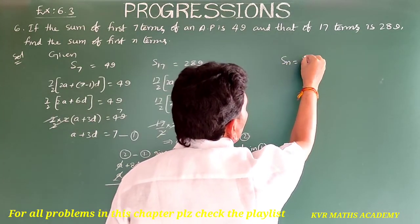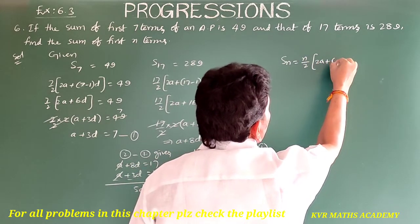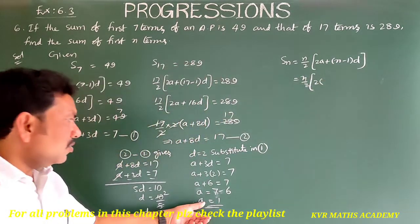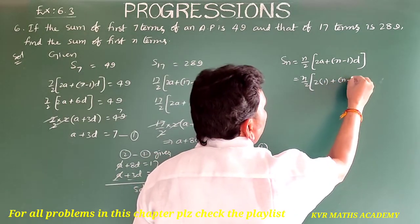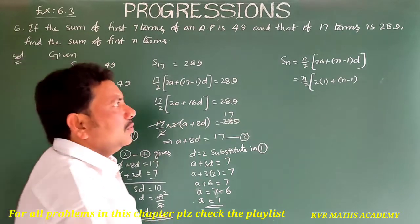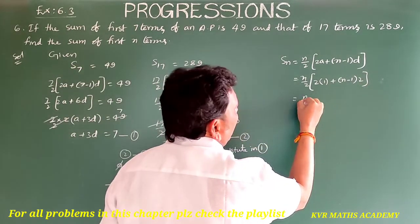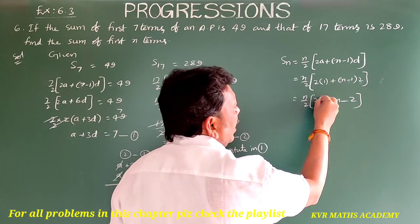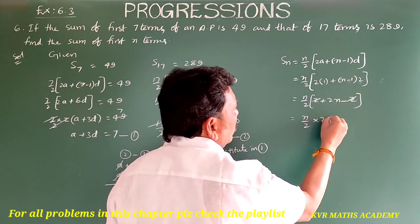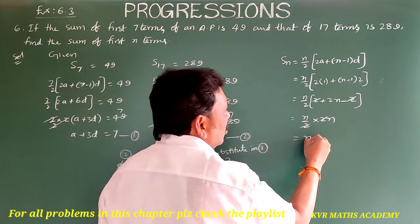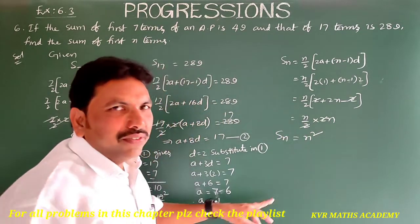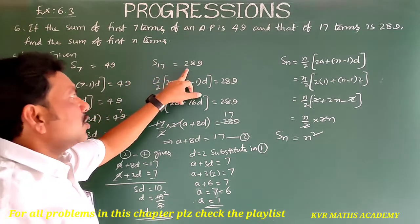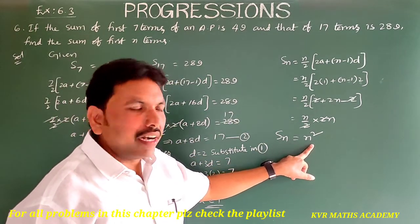Now let us find Sn. Sn = n/2 · (2a + (n−1)·d) = n/2 · (2·1 + (n−1)·2) = n/2 · (2 + 2n − 2) = n/2 · 2n = n². So Sn = n².